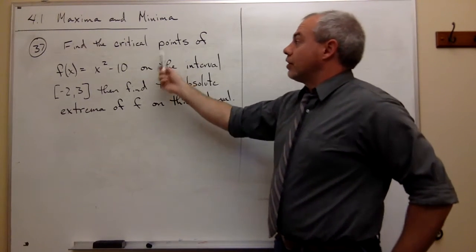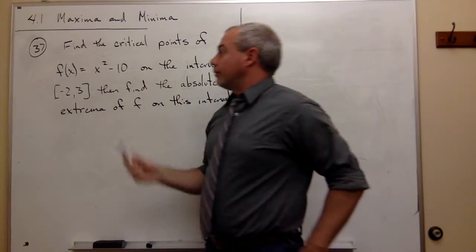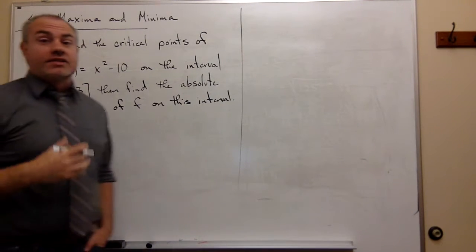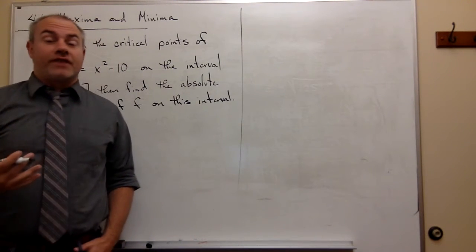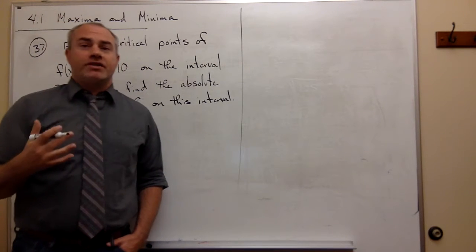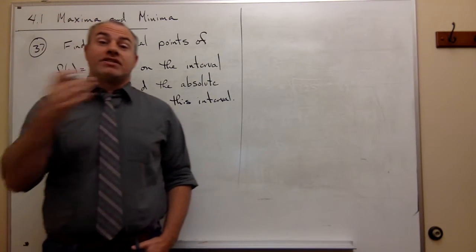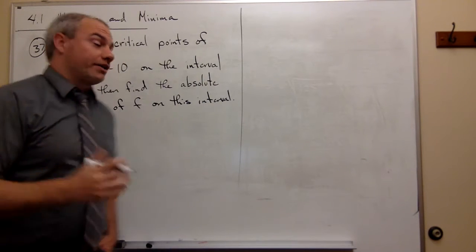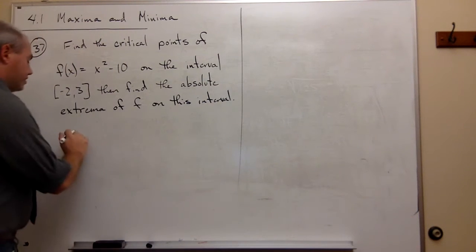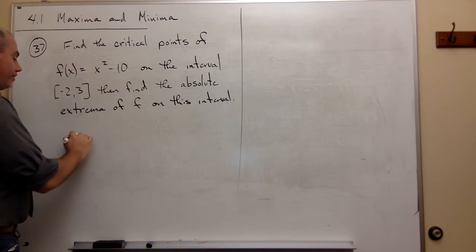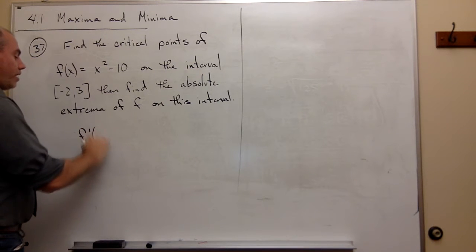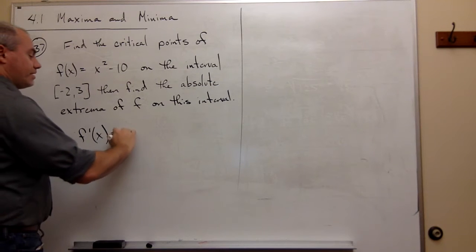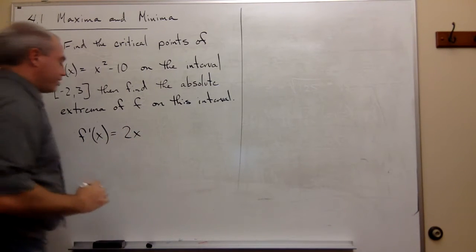The first thing we want to do is find the critical points of this function. The way that I find critical points is I take the derivative of that function and look for any places where that derivative could be zero or any place where that derivative could be undefined. So f prime of x is going to be equal to, very simply, 2x.